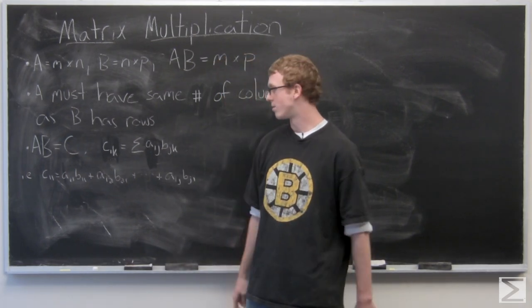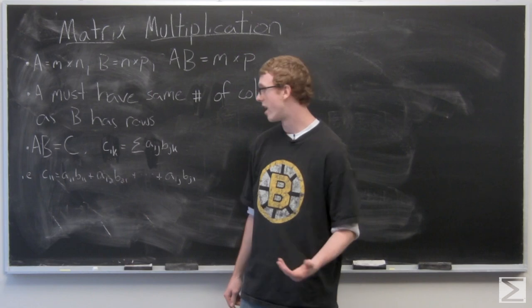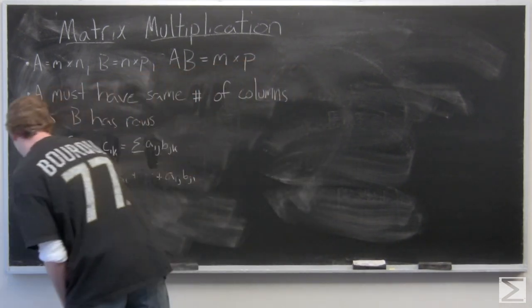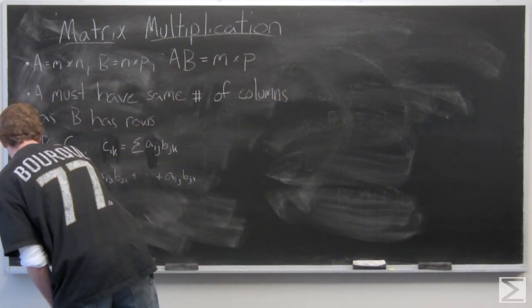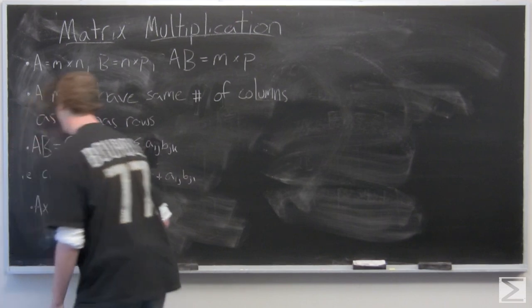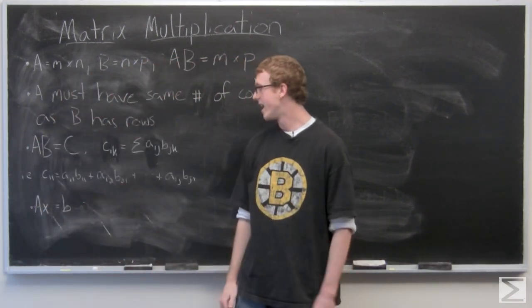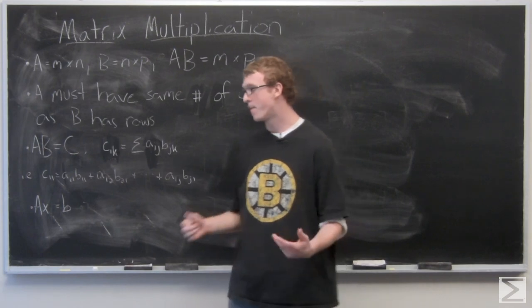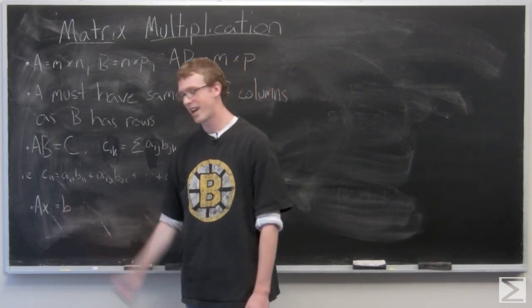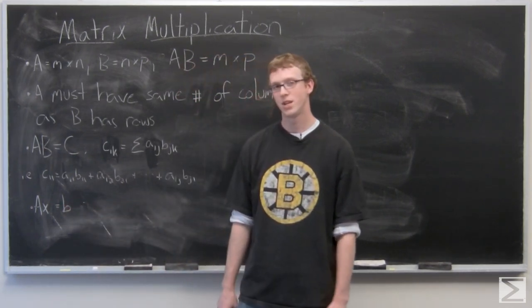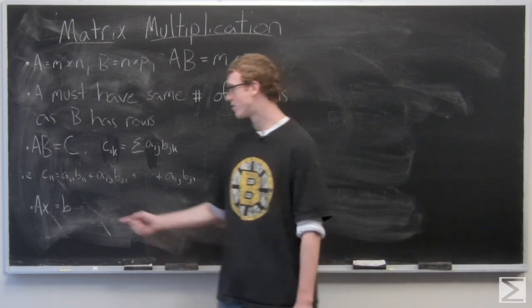Now what I was talking about with the systems of equations, a lot of times you'll see denoted as this, where A is an M by N matrix and X is an N by 1 matrix. So it only has one column. It's denoted like this normally.